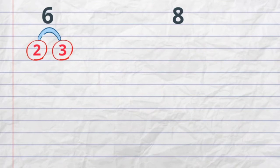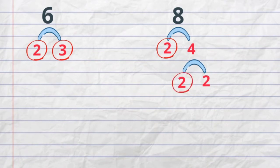For 8, I will begin with 2 times 4. I will circle the 2 because it is prime. And then I will multiply 2 times 2 and I will circle both of the 2's because they are prime.